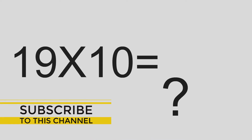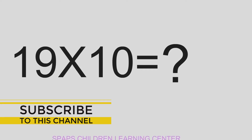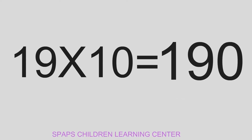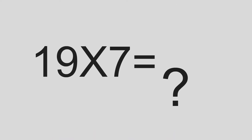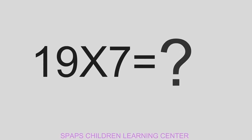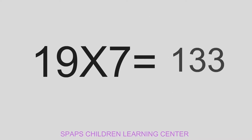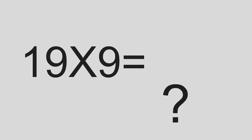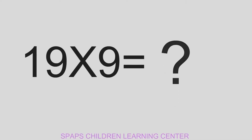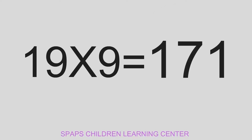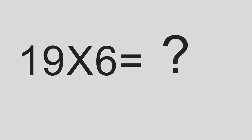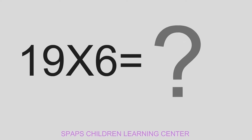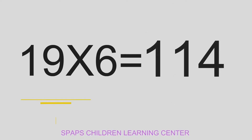19 times 10 equals to 190. 19 times 7 equals to 133. 19 times 9 equals to 171. 19 times 6 equals to 114.